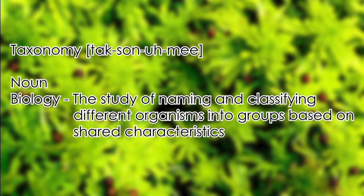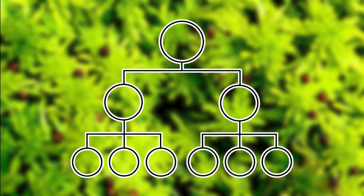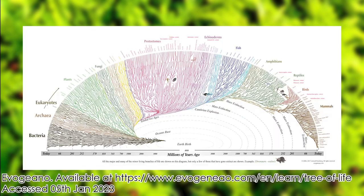In regards to biology, taxonomy is the study of naming and classifying different organisms into groups based on shared characteristics. It is a hierarchical system of organisation and it allows for scientists to gauge the bigger picture of how organisms are related to one another, which can help with the communication of ideas and give an idea of the diversity of life.